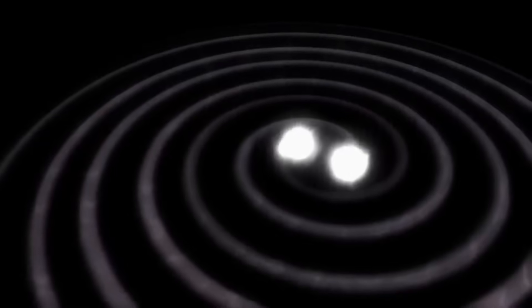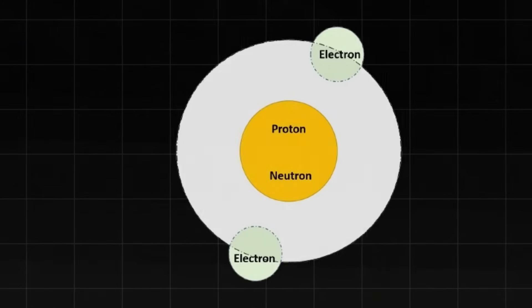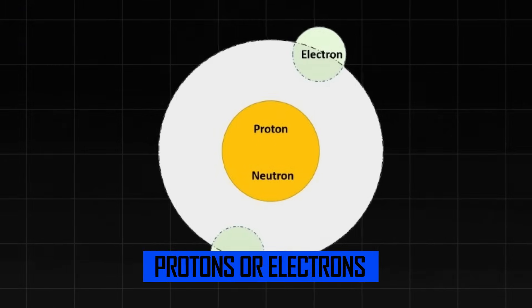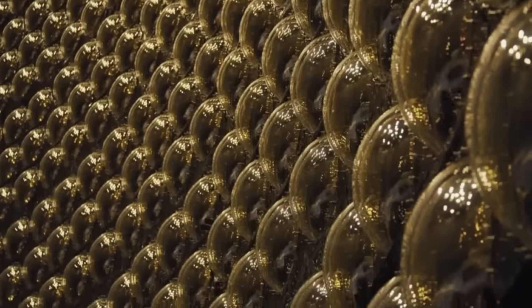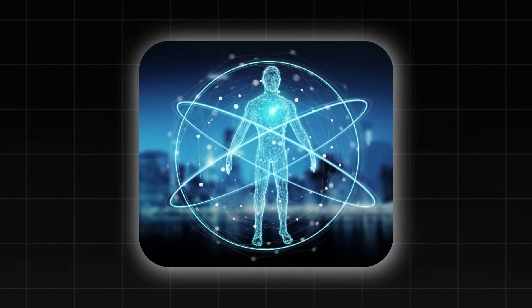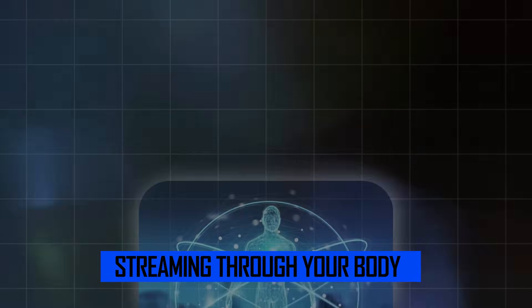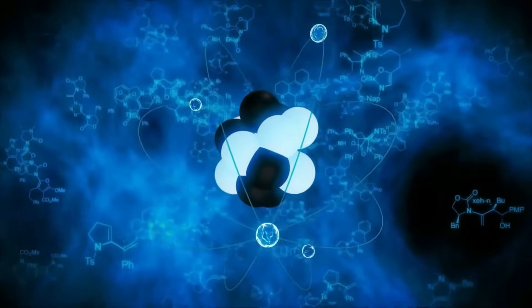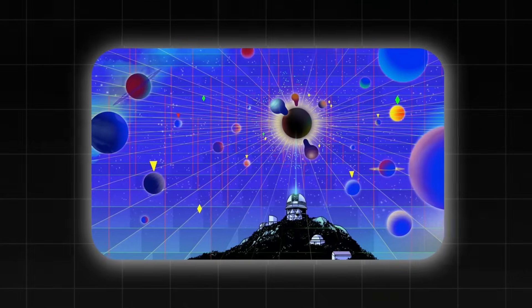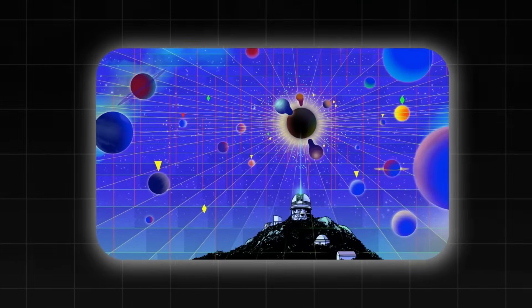Neutrinos are among the most mysterious and least understood particles in the universe. Unlike protons or electrons, which interact with electromagnetic and nuclear forces, neutrinos barely interact with anything at all. They pass straight through matter, through entire planets even, without stopping. In fact, right now, trillions of neutrinos are streaming through your body without you even noticing.